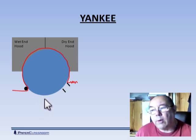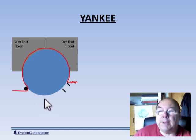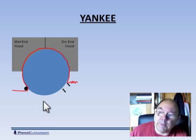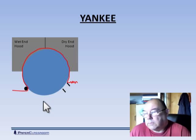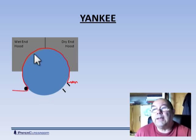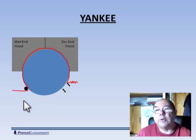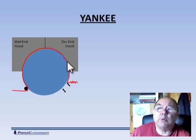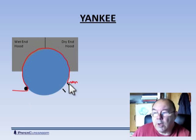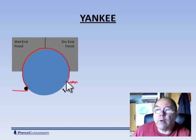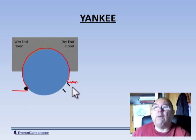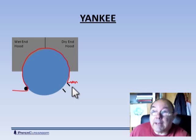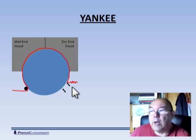Here we normally have chemicals being sprayed onto the Yankee surface. The purpose of those chemicals are to protect the surface of the Yankee, in some areas to act as an adhesion promoter so that the sheet sticks onto the surface, and as it gets around here, to be able to act as a bit of a release agent so that we can scrape the tissue off the surface of that Yankee, and it's that scraping action that we'll see in the next slide that causes this creping effect.